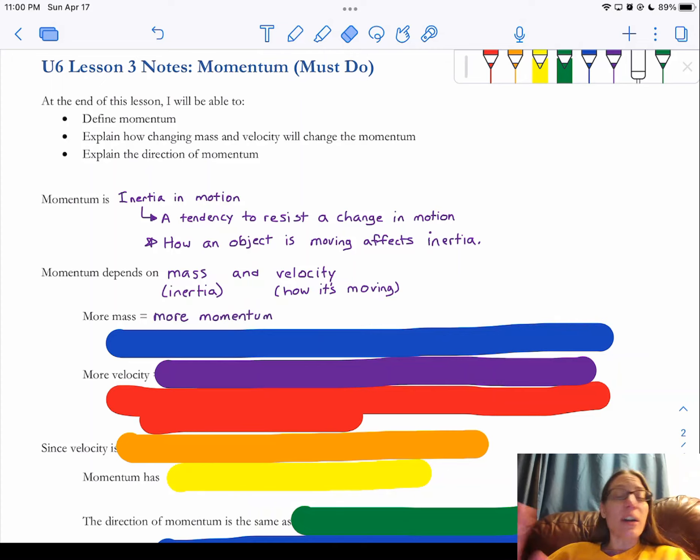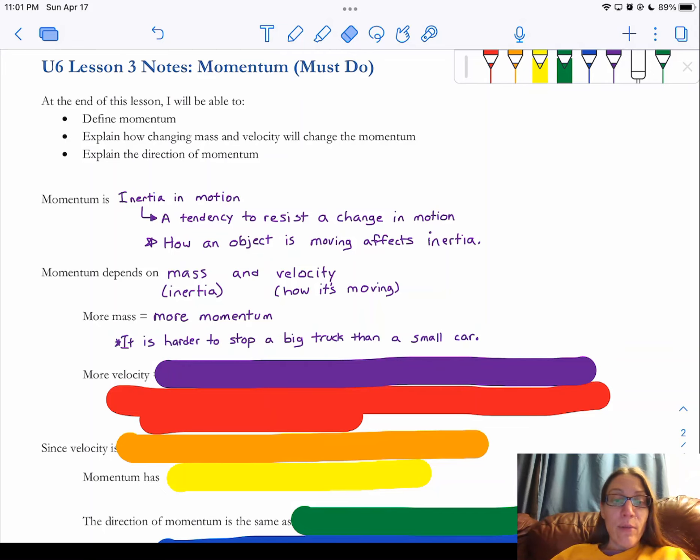When we talk about this with a sporting event, well, when you think about objects that are moving, that have inertia, the more mass they have, the more inertia they have. And the more inertia they have, the more momentum they're going to have. So if you think about a big truck that is moving, it's going to have more momentum than a small car. It's going to be harder to stop.